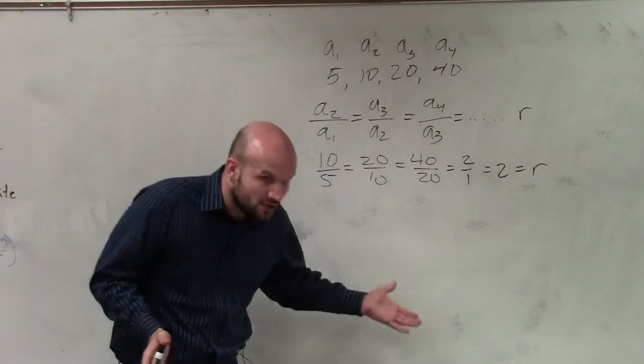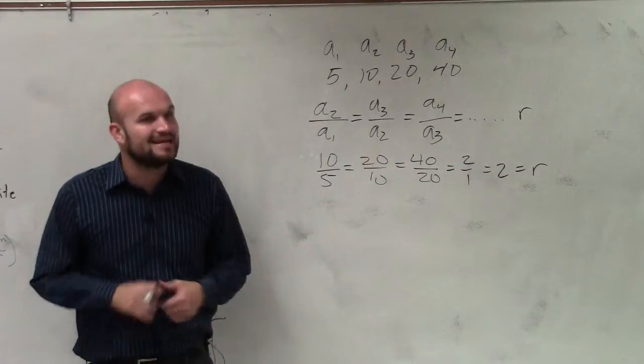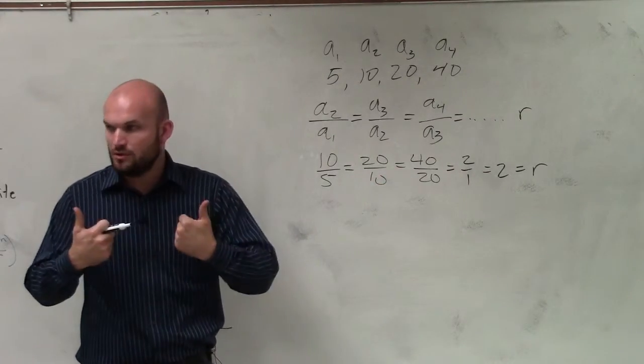So therefore, since we have a common ratio and not a common difference, this is a geometric sequence. Cool? Good.